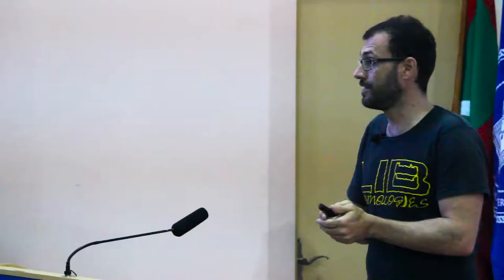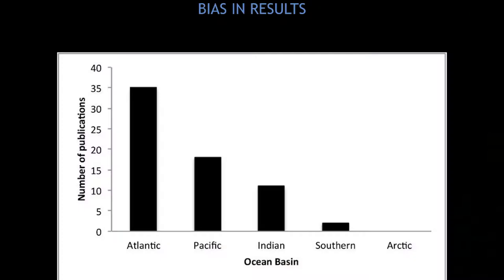There was some geographical bias in the results. The Atlantic and Pacific were generally where most of the information came from. Places like the Indian Ocean — such as where we are right now — the southern ocean and the Arctic have very little information. This is where we need to start improving our evidence on ghost fishing and ghost gear in these regions.